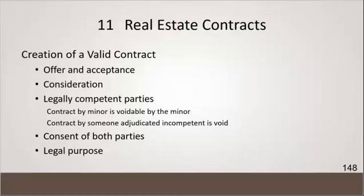One side says the highest I'm going to go is $118,000. The seller says the lowest I'm going to go is $121,000. That's it — we're done. One of my agents is going through that right now. They're about $4,000 apart on a $380,000 house, and the seller has absolutely said he's done. They're about $4,000 apart and the deal's probably going to end up dying.